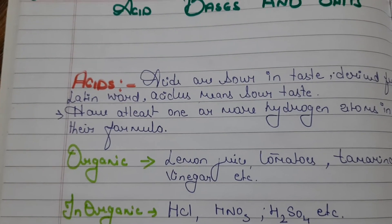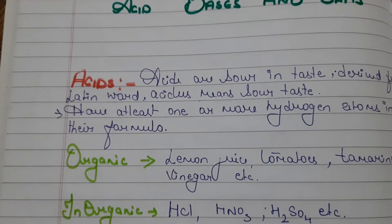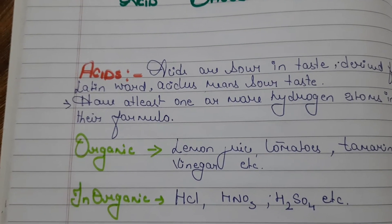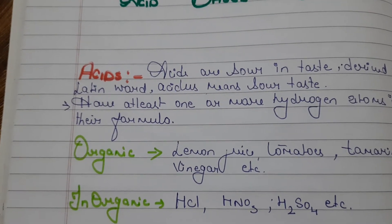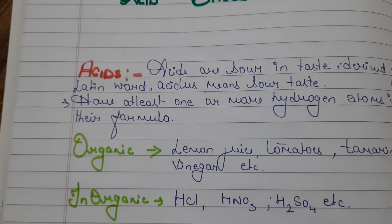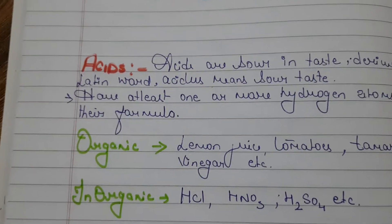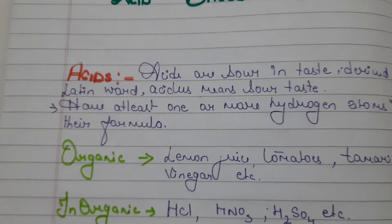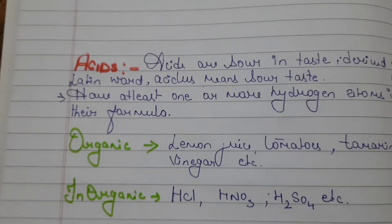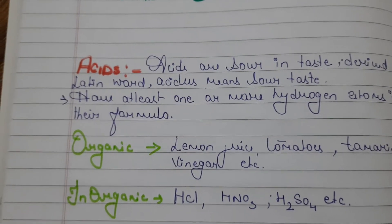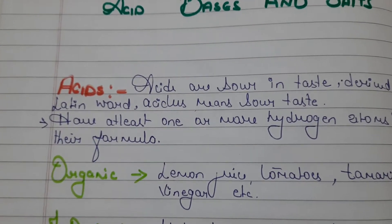All things which we get from animals and plants are termed as organic compounds, and those which we get from minerals and rocks are termed as inorganic compounds. Now let's start.